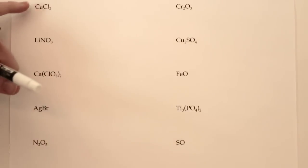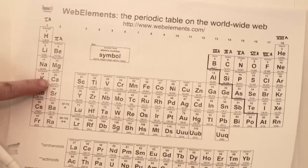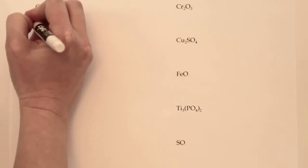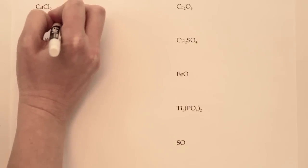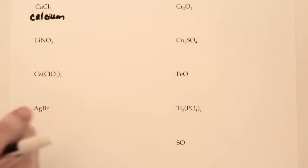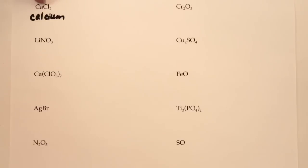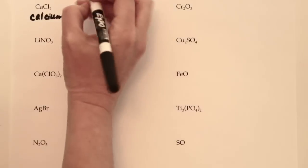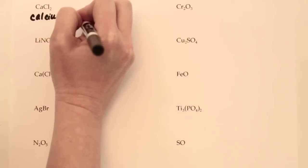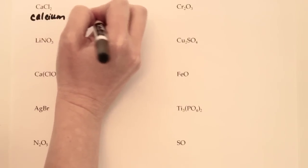The first example is CaCl₂. We have to find out where calcium is. Because calcium is in the 2A family, all we have to do is write the word calcium. Now for the nonmetal portion, CL₂ — yes there are two chlorines but they're all chlorine. When it's only one type of element you chop off the ending and replace it with -ide. So this would be calcium chloride.